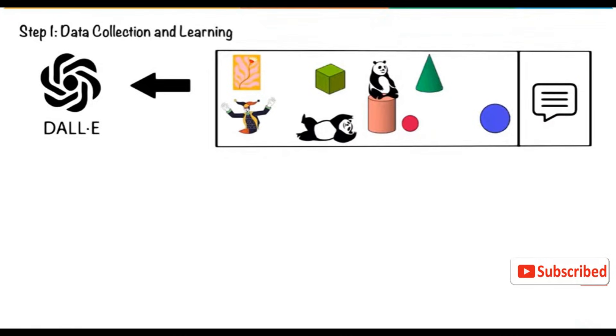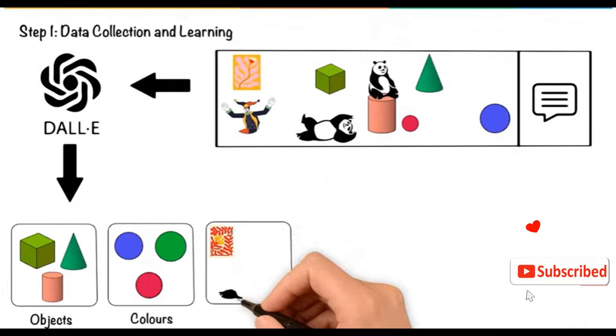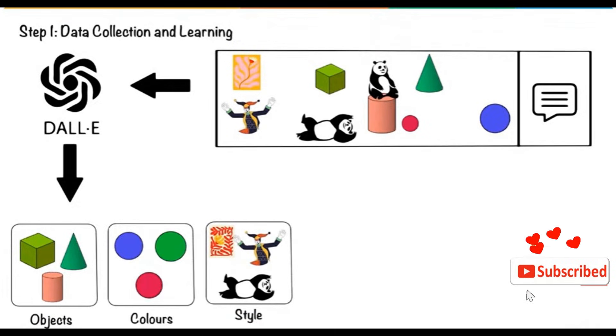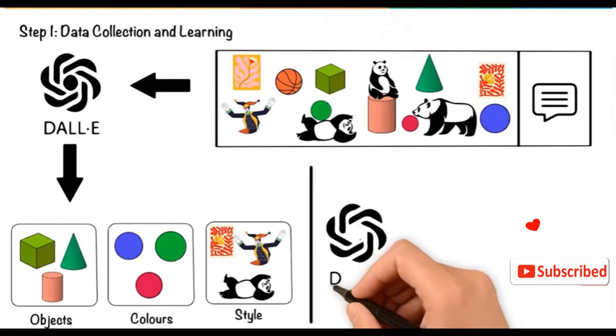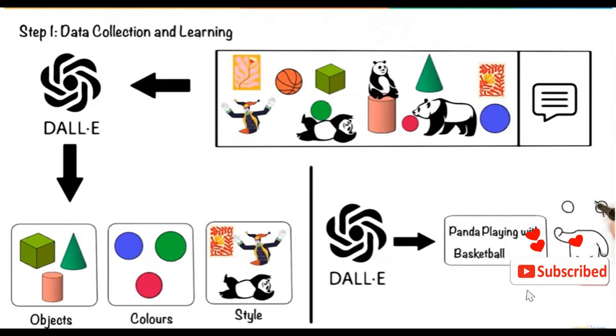These data sets teach the model to recognize different objects, colors, styles, and how to associate text with corresponding images. The more data the AI learns from, the better it can generate accurate and diverse images based on user prompts.